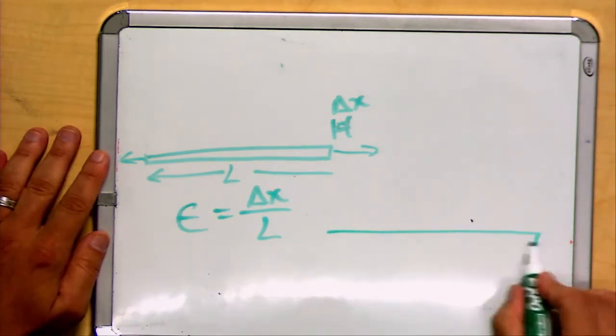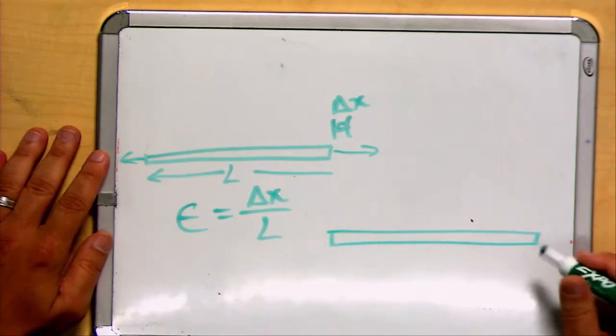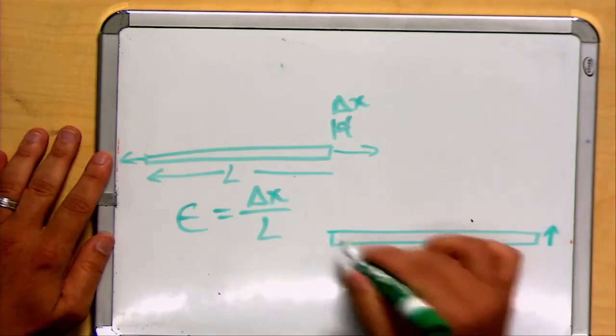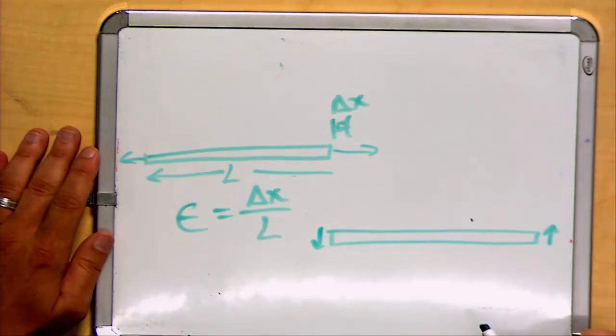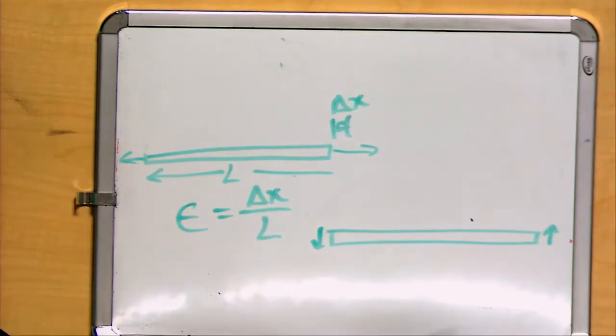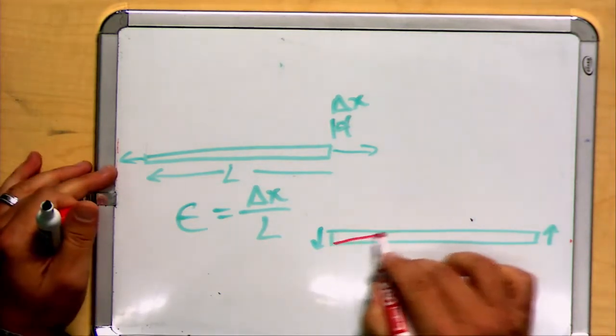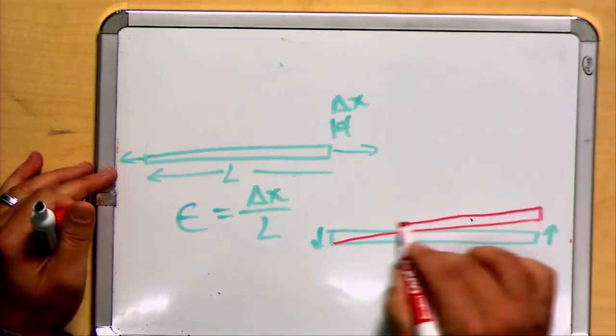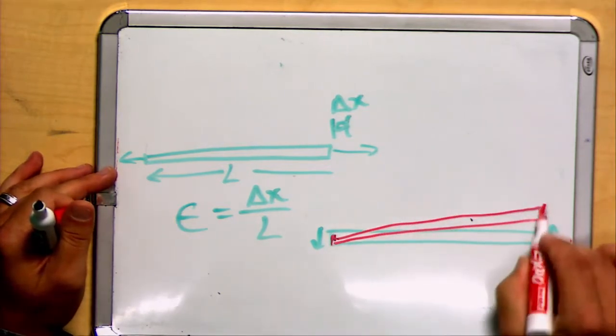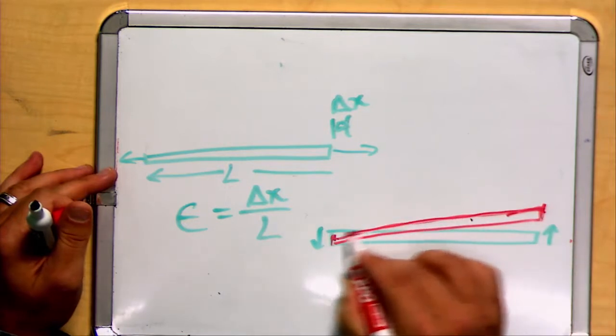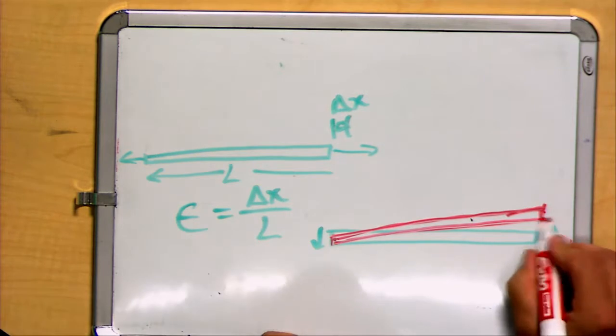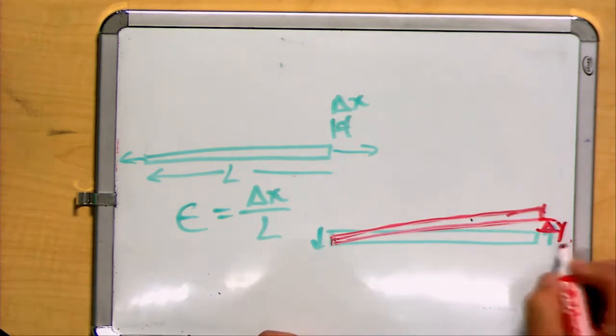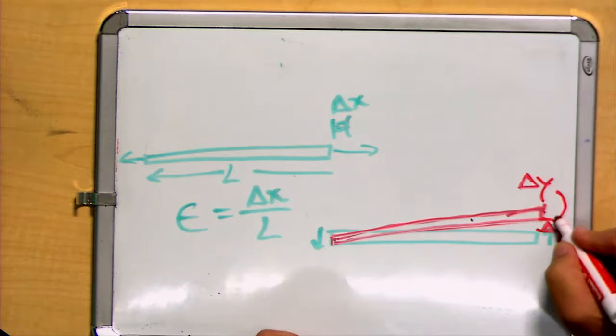If we take the same type of bar and consider the application of a shear stress, we're going to get some deformation, but the deformation isn't going to result in lengthening of the bar - it's going to result in shifting the bar in a parallelogram fashion. This is greatly exaggerated, but we'll assume it shifts some dimension, delta y.